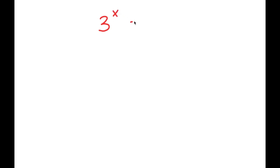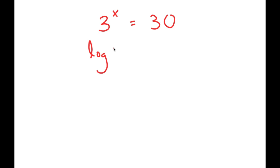In this video, I'm going to solve the equation 3 to the power of x is equal to 30. To solve this equation, I'm going to start by taking the log on both sides. So I get log of 3 to the power of x is equal to log of 30.